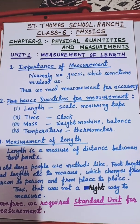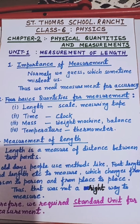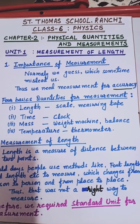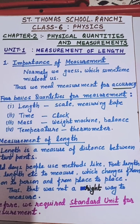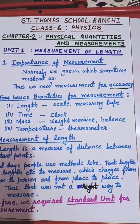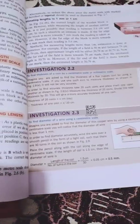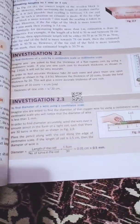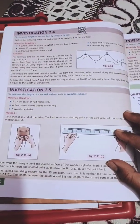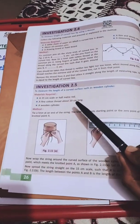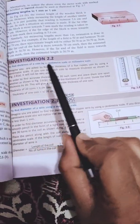Dear students of class 6, we are going to start with the second part of this video for the first unit about its investigations. In the first unit, there are five different investigations given: investigation 2.2, 2.3, 2.4, 2.5, and 2.6. These investigations are very important to understand and also come in examinations. Let me explain all of them one by one.